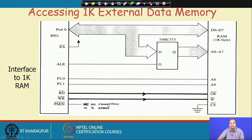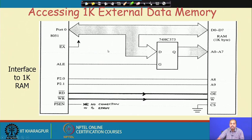If there is no external EPROM then PSEN bar will never be connected. If an EPROM is present, then PSEN bar may be connected to it. The EA bar line (external access) is connected high because this is not code access — this is data access.